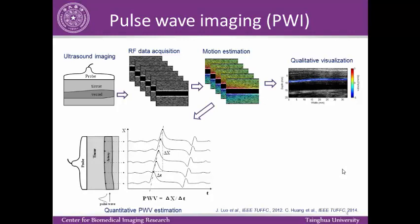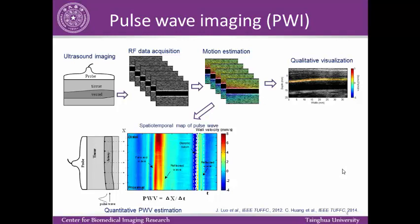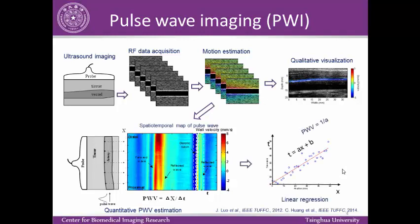For quantitative pulse wave estimation, pulse waveforms along the arterial wall are obtained and the time delays between the waveforms can be determined. Pulse wave velocity is defined as the length of the artery divided by the time delay. This can also be represented as spatial temporal maps, and typically a linear regression is performed between time delays and arterial positions to calculate pulse wave velocity and reduce measurement errors.